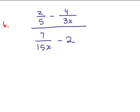To simplify a complex fraction, one method is to find the least common denominator of all the denominators. So I have a denominator of 5, 3x, and 15x. 15x is the least common denominator. Once you find that, you multiply the whole numerator by the least common denominator, and the whole denominator by the least common denominator. So you're multiplying by 15x over 15x.